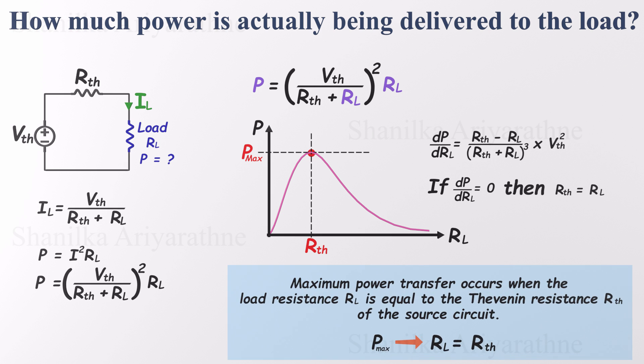The circuit delivers maximum power to the load when the load resistance exactly matches the Thevenin resistance of the source. If RL is higher or lower than RTH, we're not getting the most out of the circuit. So when you're connecting a load and want it to draw as much power as possible, match it to the Thevenin resistance. That's the essence of the maximum power transfer theorem.